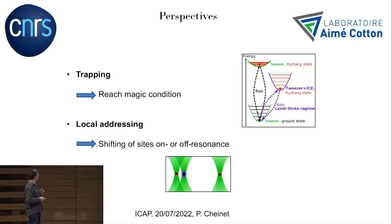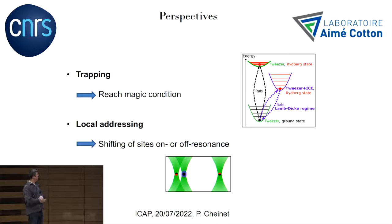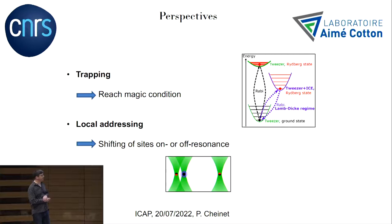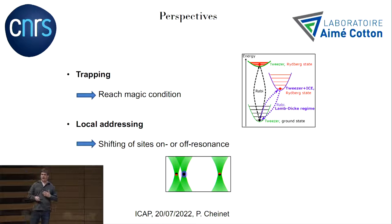You can also consider using ICE for trapping in optical tweezers or an optical lattice — that was the original idea — to perform better quantum control over the qubit when exciting to the Rydberg state. The last idea is local addressing: ICE light is intrinsically short wavelength because it uses the ion transition, typically shorter than other transitions. This should allow you to address a single site, shift it off resonance, and allow better connectivity throughout an atomic array.